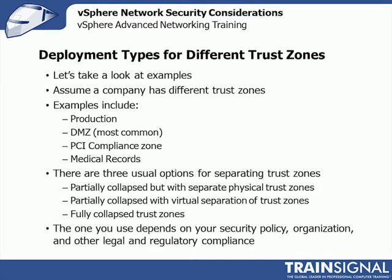Assume a company has different trust zones: production, DMZ, PCI, medical records for HIPAA. There are usually three options for separating these: partially collapsed with separate physical trust zones, partially collapsed with a virtual separation, and fully collapsed. The option you use depends on your security policy, your organization, legal and regulatory compliance, and the level of risk that a security team or CISO thinks there is with some of these options. They may not trust the hypervisor to truly segment VMs, so they start with separate clusters, and then later start collapsing things together.